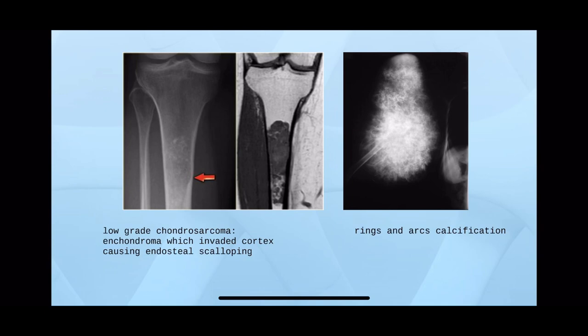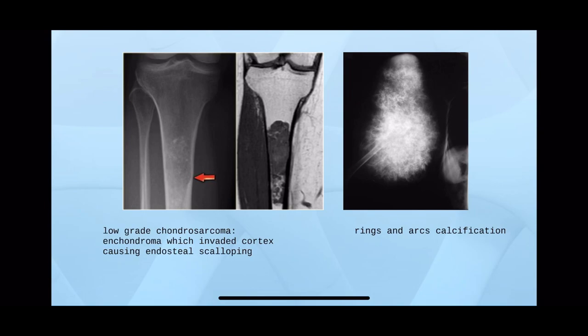On the other side, you can see primary chondrosarcoma with rings-and-arcs calcification. All chondral tumors — enchondroma, osteochondroma, chondrosarcoma — will have calcification, because chondroid (cartilage) tumors have the pathognomonic sign of calcification.